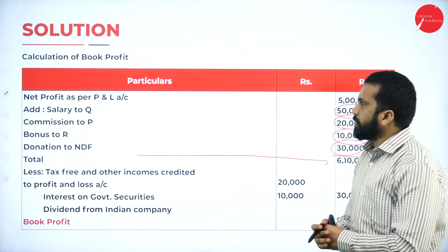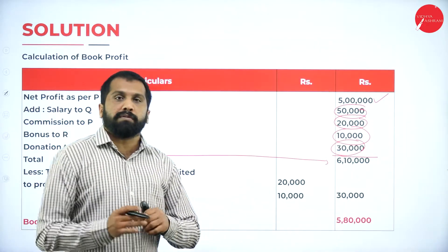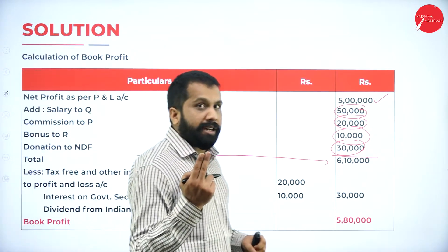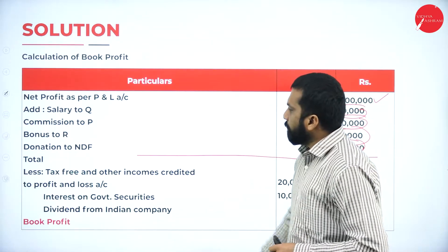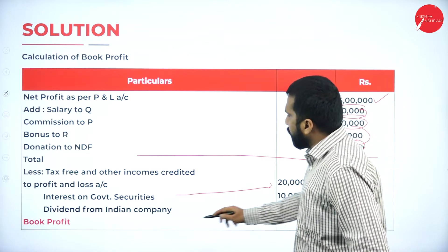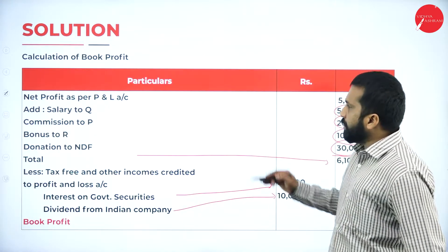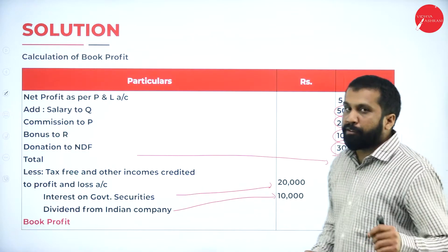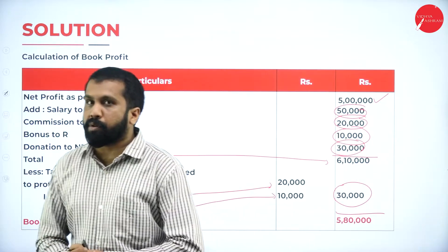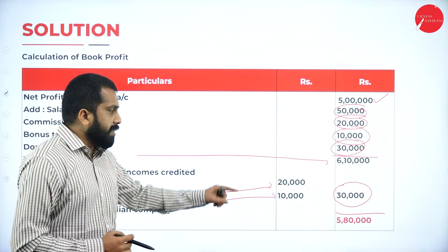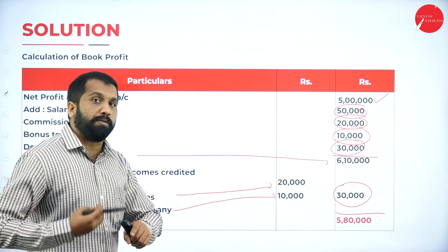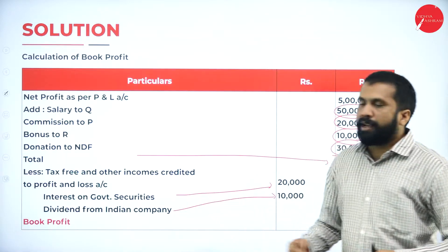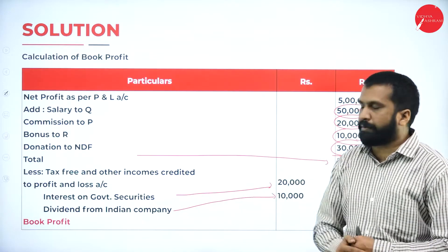From 6 lakh 10,000, two exempted items are included that we must remove: interest on government securities (20,000) and dividend from Indian company (10,000) — totaling 30,000. After removing these, the book profit becomes 5 lakh 80,000. This 5 lakh 80,000 includes amounts payable to partners — salary, commission, donation — but excludes the exempted interest and dividend income.